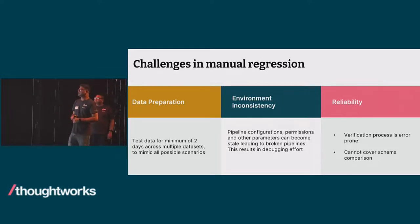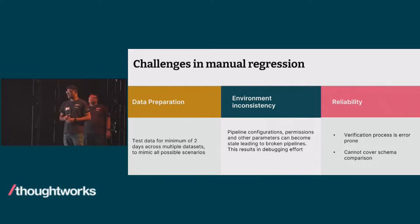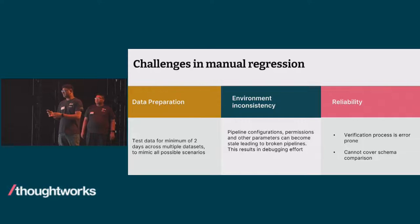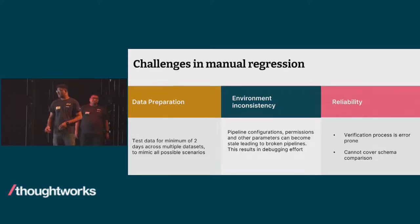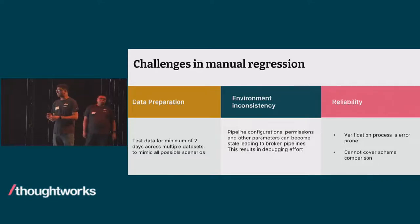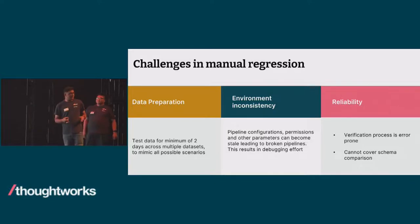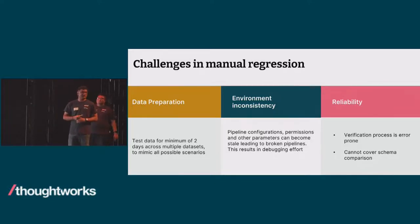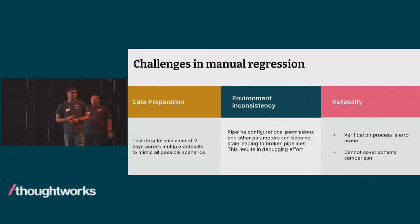The second major challenge was environment inconsistency. There were multiple parameters in the pipeline configurations that were not given proper permissions, which led to broken pipelines and delays in testing. The third challenge is reliability — being human, we are prone to errors because verification was done manually, and schema conversion cannot be tested manually.